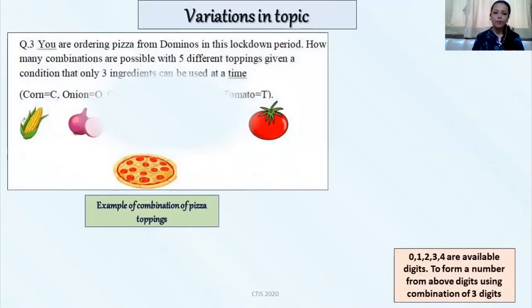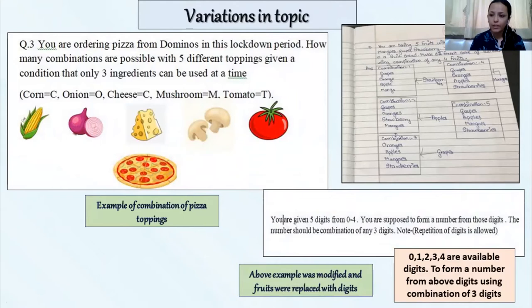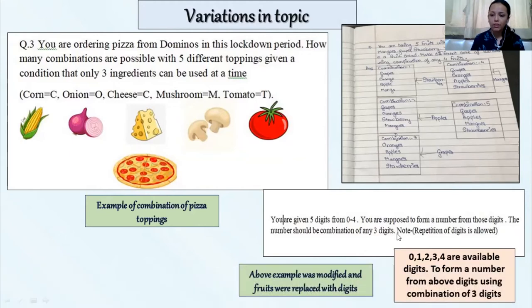Then we had the example of pizza toppings, the same we repeated, and here one more example was modified about the fruits. As previously said, the 5 fruits were given and out of 5 fruits 4 fruits were to be selected for the fruit salad. So instead of fruits we changed this particular example. Now instead of fruits we introduced them the digits. Here the digits 0, 1, 2, 3, 4 were given to them and from this available 4 digits students have to form a number. And the number is nothing but combination of this particular 3 digits. This example motivated the students having higher order thinking skills and they came up with certain conditions: Are we supposed to repeat those digits and is the order going to matter? So definitely order is going to matter in this particular example.